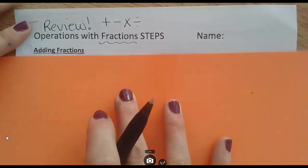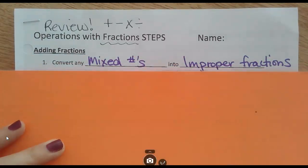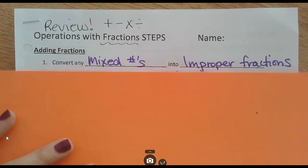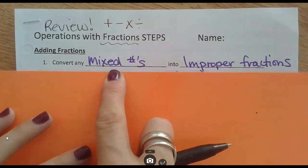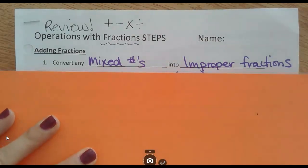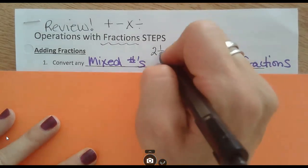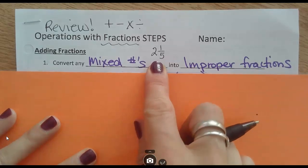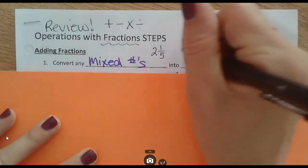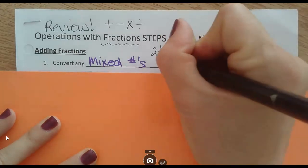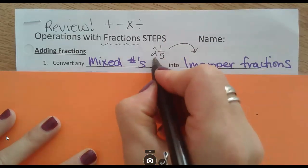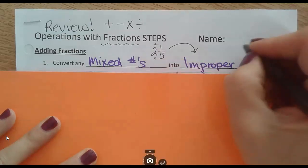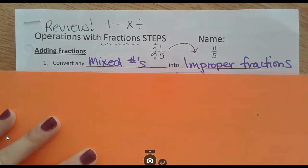Starting with adding fractions. Your first step — fill in the blanks as we go, then we'll do one example of each operation. Your first step is to take any mixed numbers and turn them into improper fractions. For example, if you had 2 and 1/5, we don't want to add or subtract with mixed numbers, so we turn it into an improper fraction. Multiply and add: 10 plus 1 gives me 11/5. Always do that before starting the operation.